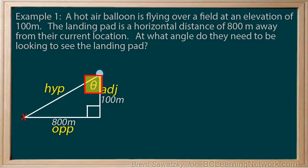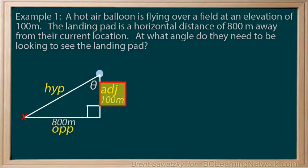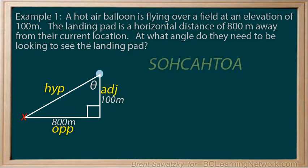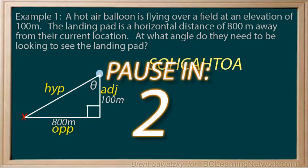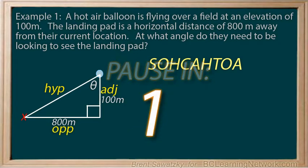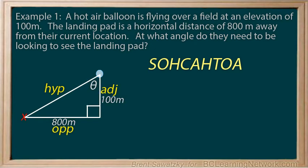Our unknown is theta, the angle. Therefore, we don't want any other unknowns, so we'll need to include our two knowns: the 800 meters and the 100 meters. Thinking SOHCAHTOA, since we want to use the opposite 800 meters and the adjacent 100 meters, tan is the ratio we need.